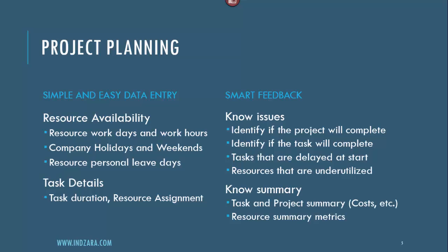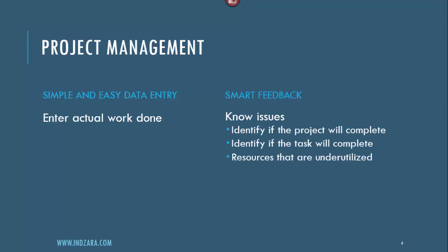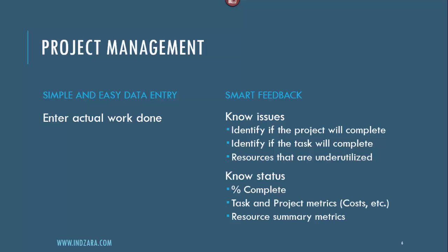At any point you can also view a summary: how long the overall project will take, the total cost involved, how many tasks there are, and how many hours resources are available. This high-level summary is easy to communicate to stakeholders. In the project management stage, the data entry is even simpler — you only enter the actual work being done in a simple table. The template then highlights any issues visually so you can take action, shows your percentage of completion, and all metrics update instantly as soon as you enter the actual work.